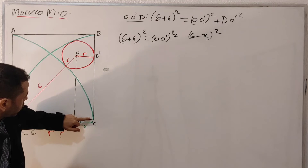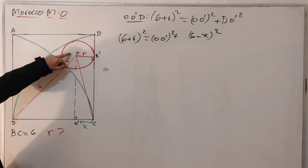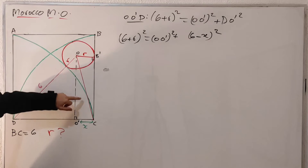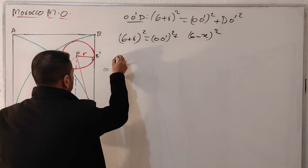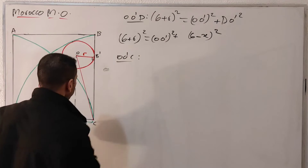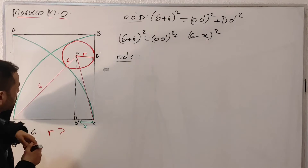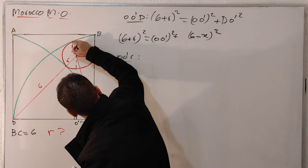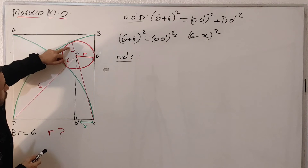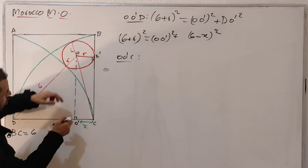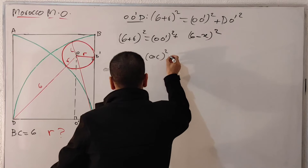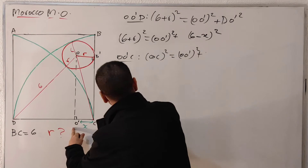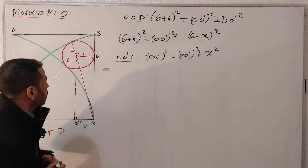Now I'm going to draw another line from point O to point C. This gives a new right triangle O-C-O prime. Applying the Pythagorean theorem: OC² equals O prime² plus x². We know OC equals the radius of the big circle minus r, so OC = 6 − r. This gives us: (6 − r)² = O prime² + x².